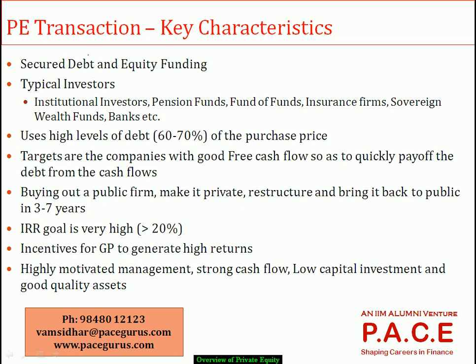Some key characteristics of any PE transaction: there is equity funding provided by GPs and LPs, but typically the majority part of a PE transaction — around 60 to 70 percent — consists of secured debt, meaning equity funding is around 30 to 40 percent. The major investors through the LP route are institutional investors such as pension funds, sovereign wealth funds, insurance firms, and banks — a large number of financial intermediaries participate in the PE fund.